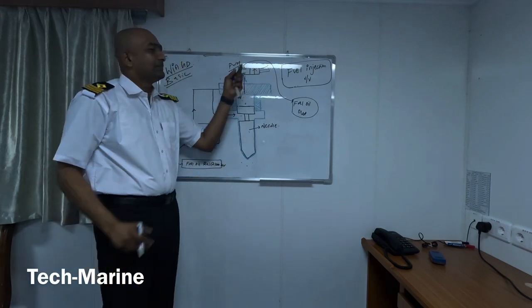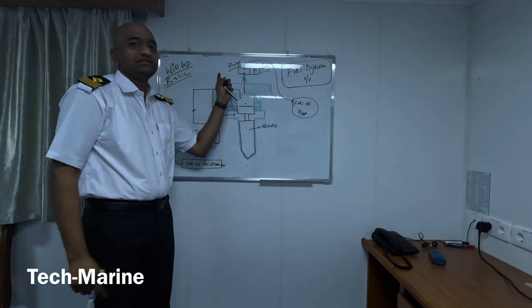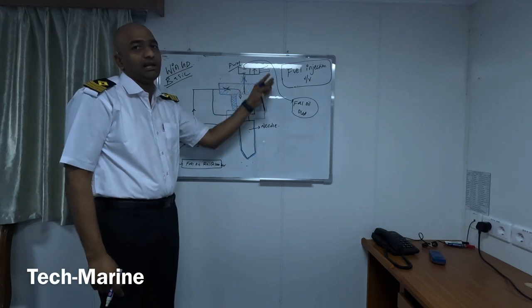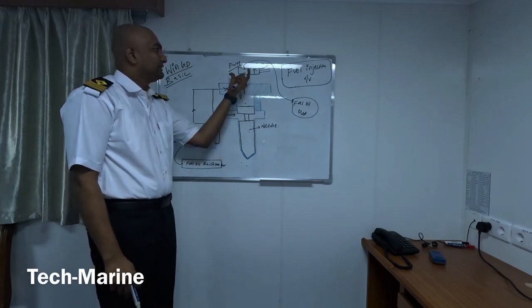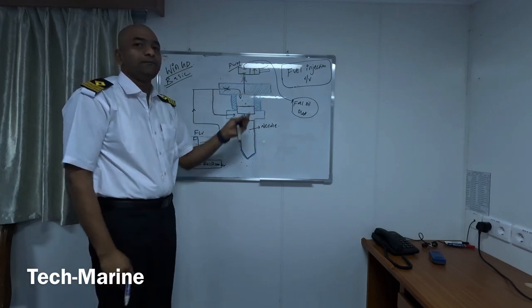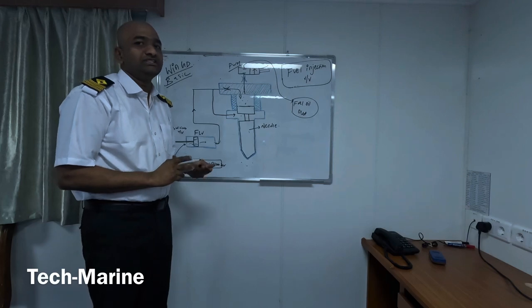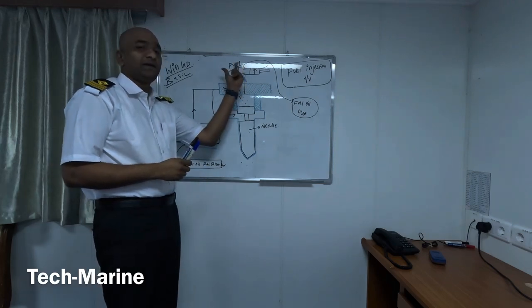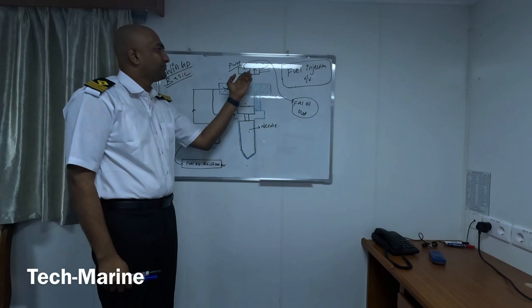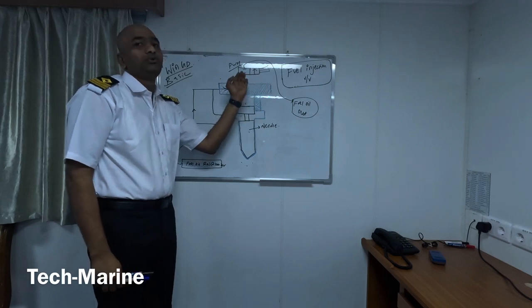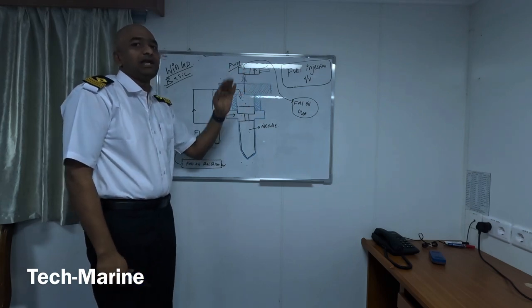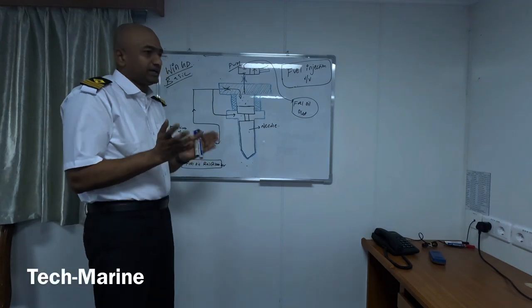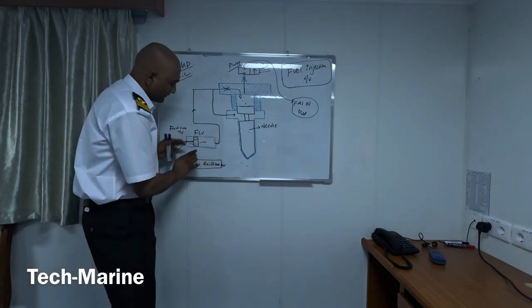When the solenoid valve drains the fuel, it goes out. This solenoid valve receives a PWM signal. The PWM signal is a Pulse Width Modulation signal - it is a high power signal. Our engineers have explained this in a separate video on WinGD controls: what is a PWM signal, why it is required for this fuel injection valve, and what are the high power and low power signals.